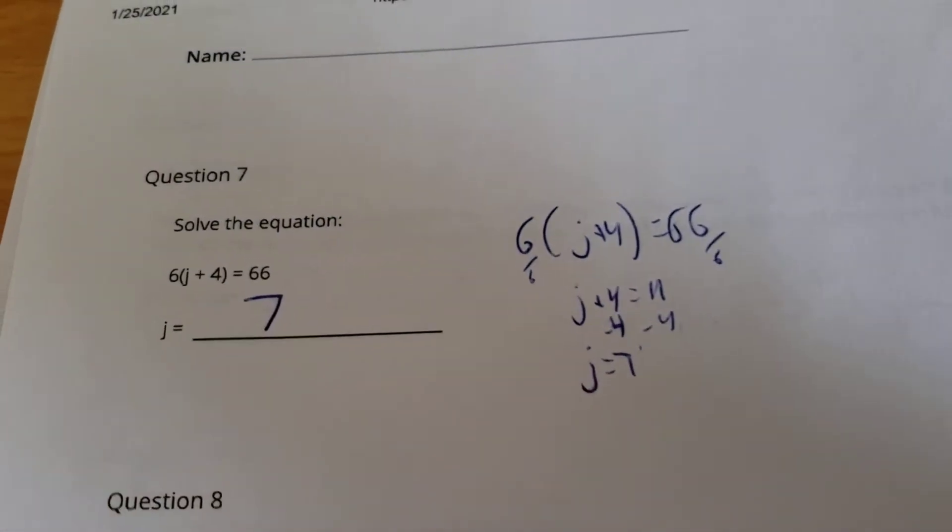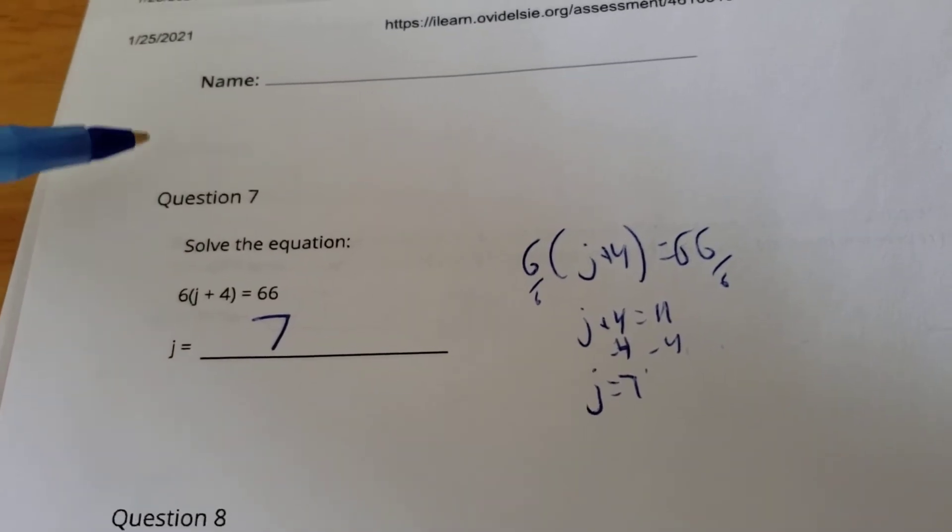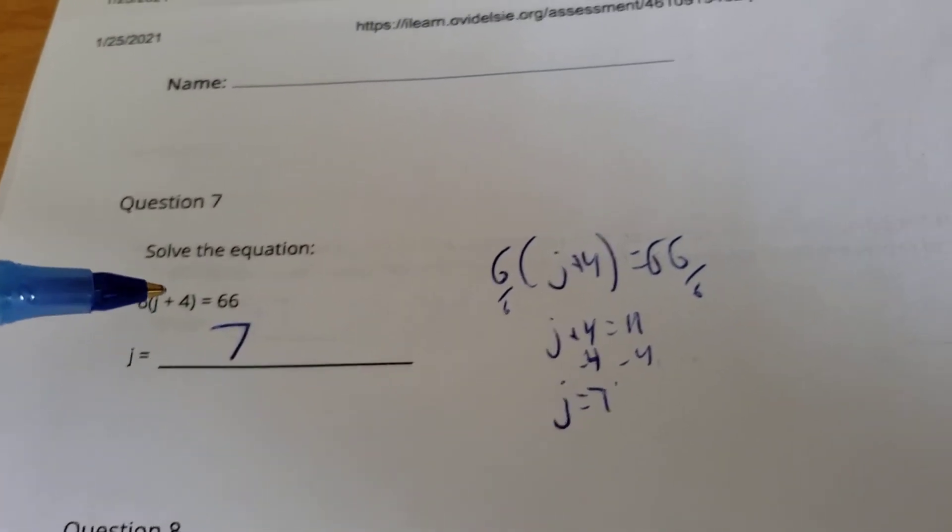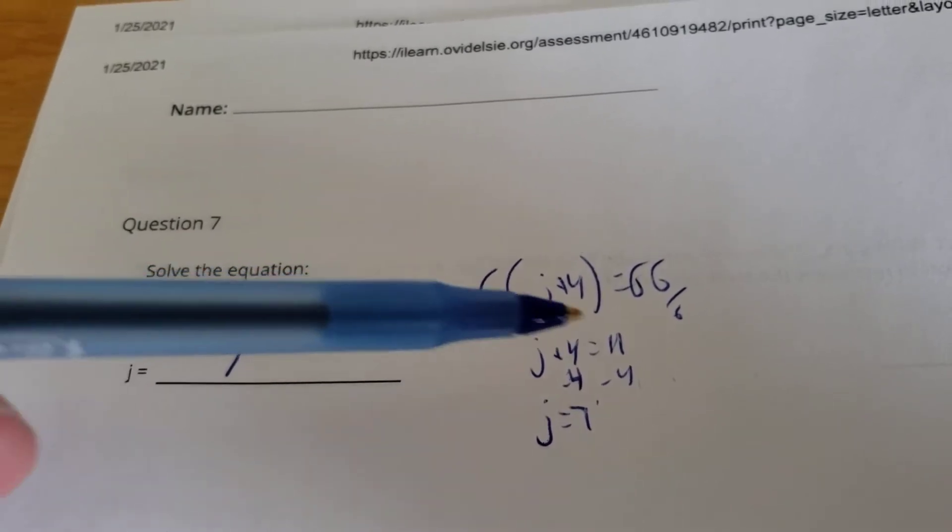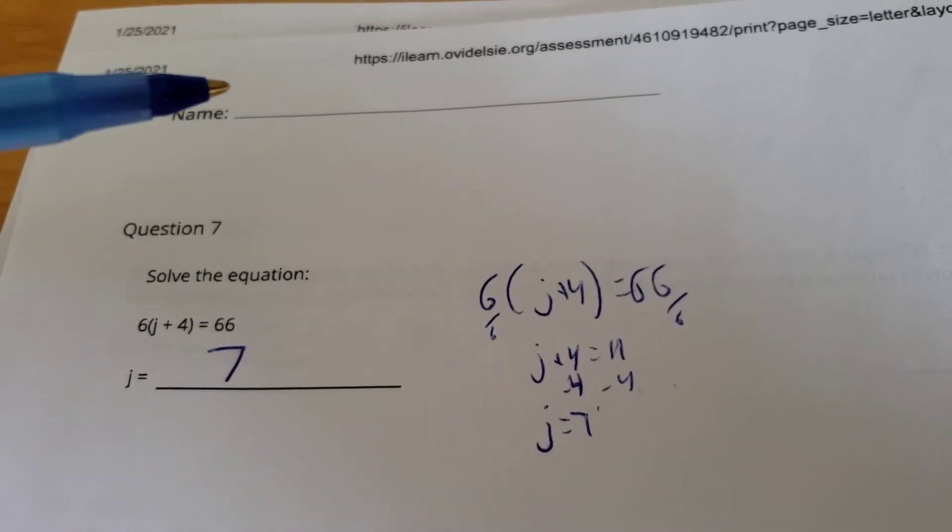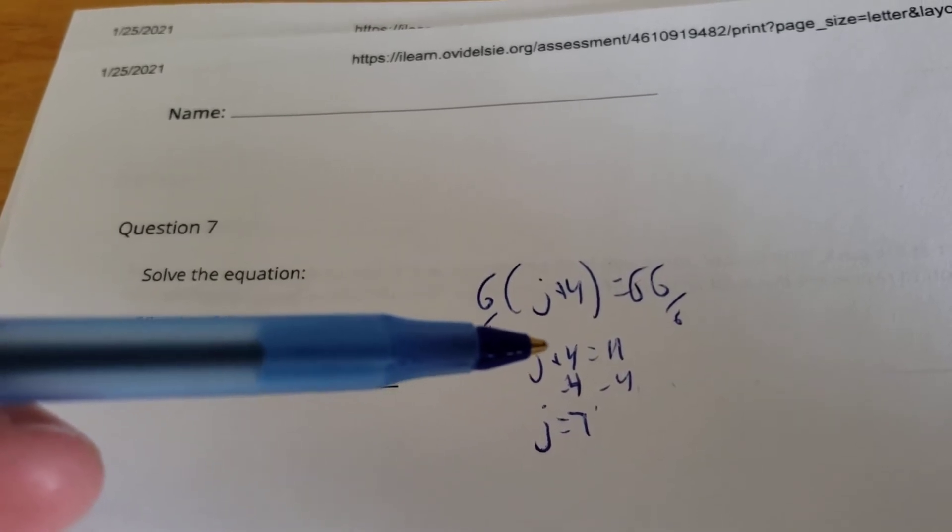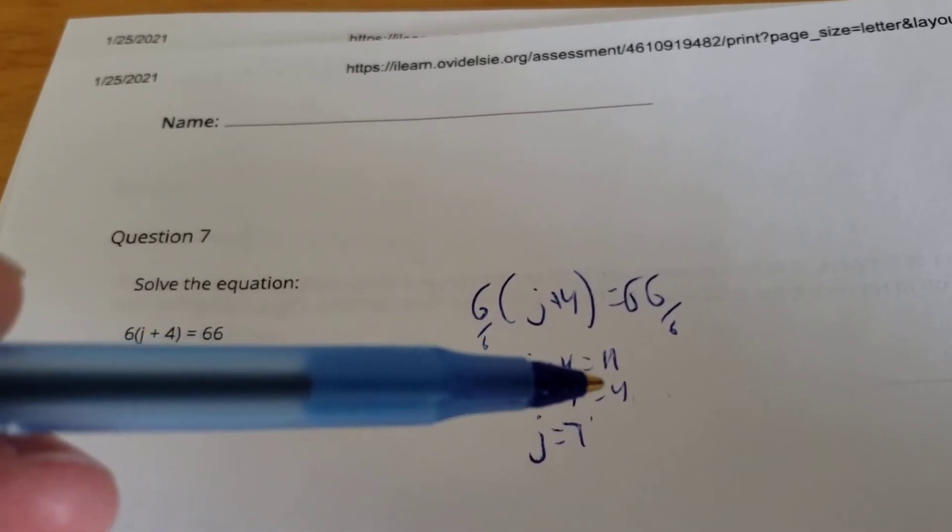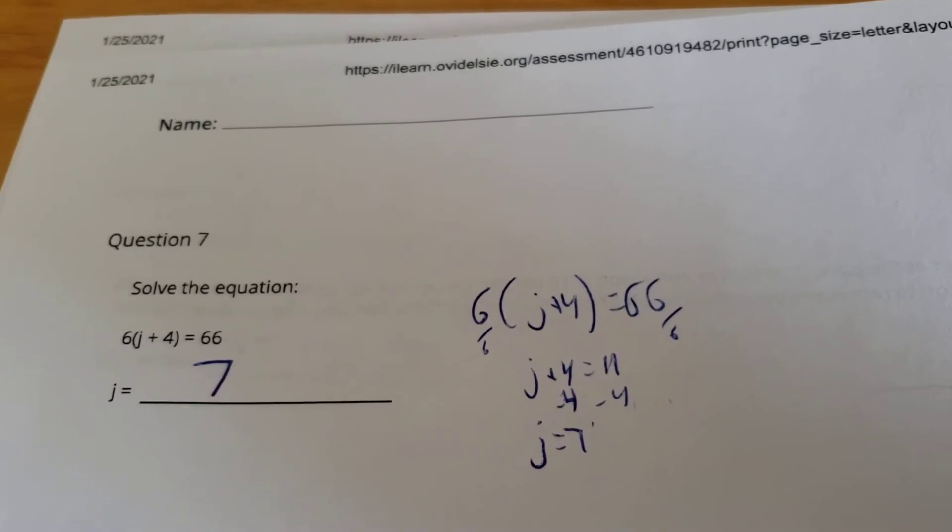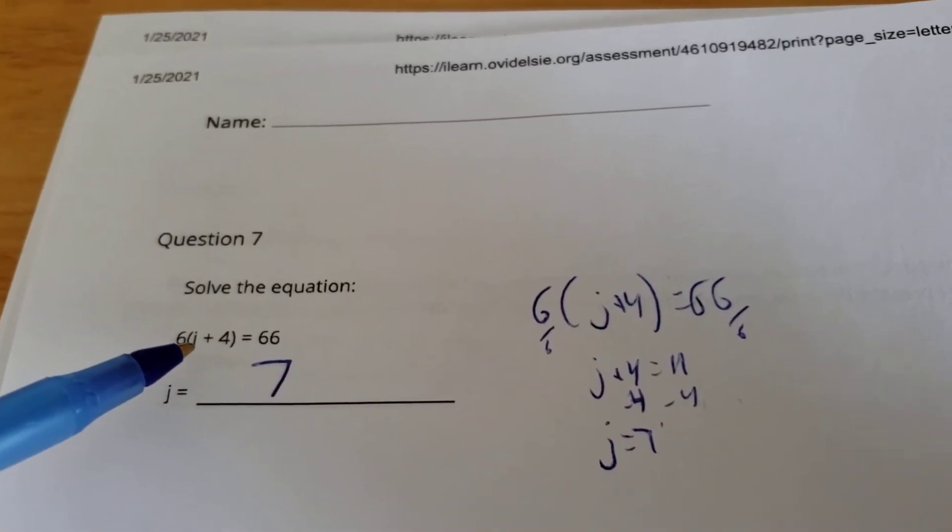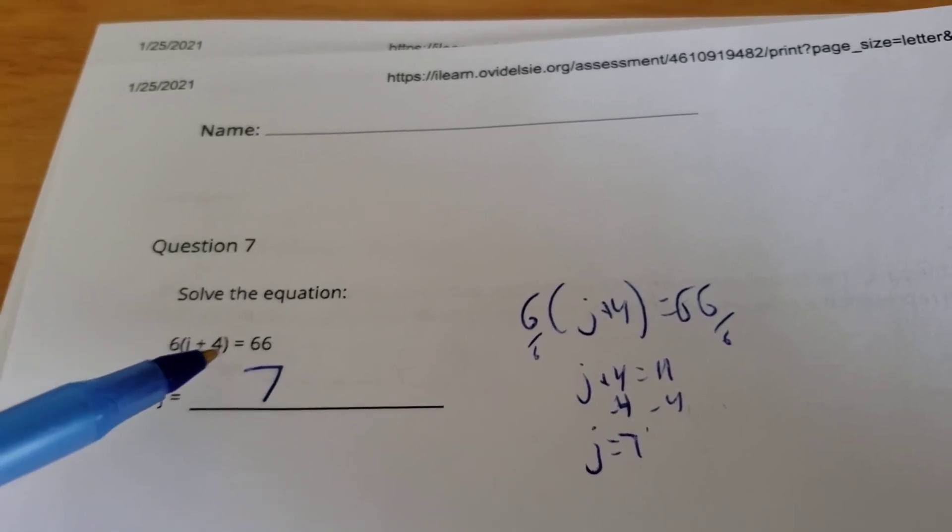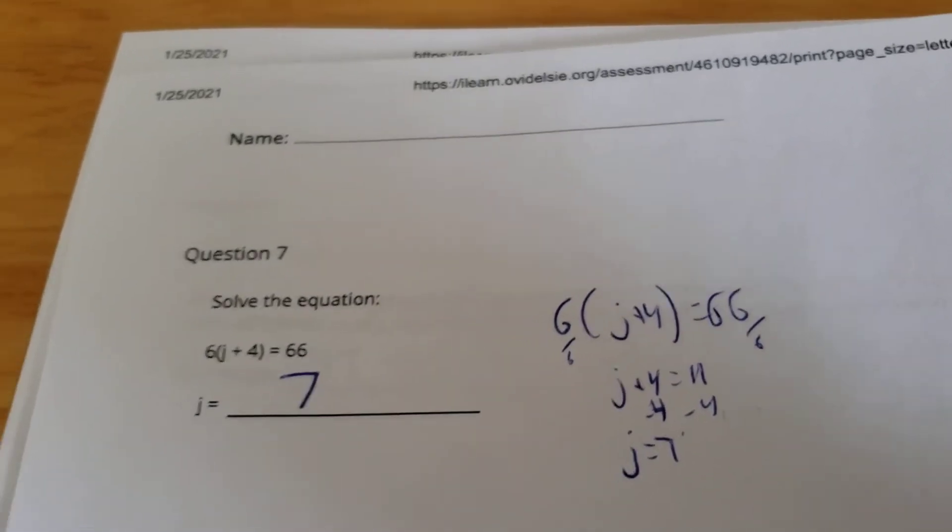Now, time for some equations. Solving our equation. We got 6 times, you got the quantity, J plus 4. Well, what I did, instead of distributing first, I got rid of the times 6 right away. So, divide by 6, divide by 6, and I get J plus 4 equals 11. And then get rid of the plus 4 by minus 4, and I get J equals 7. Remember, you can always double-check equations when you're done. If you put a 7 in here, 7 plus 4 is 11. 6 times 11 is 66. So yes, that is correct.